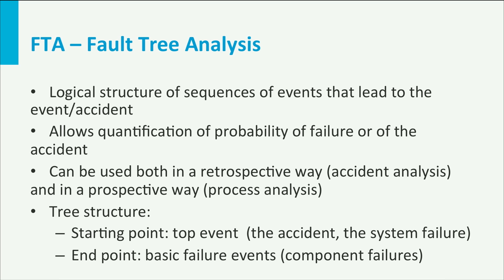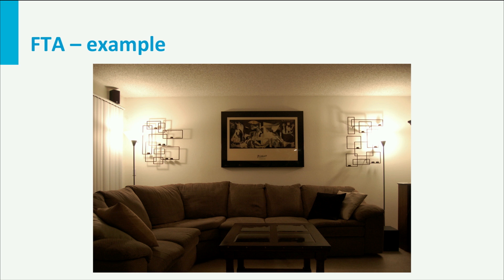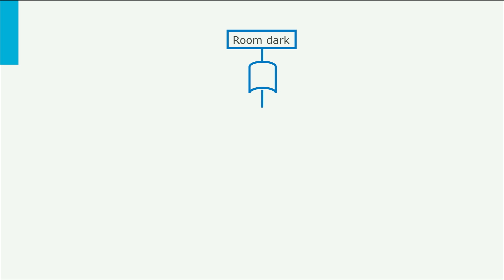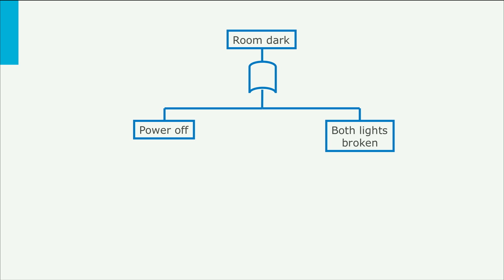Let's take as an example a room that has two lights in it. We enter the room and the lights don't go on. Our top event is a dark room, and we can think of two reasons why this is the case: there is a power failure, or the two lights are broken. Notice the little symbol that connects the two sub-events to the top event. This is called a gate, and in this particular instance it is an OR gate. This means that only one of the sub-events is enough for the top event to happen. There is also an AND gate, which has a straight bottom, meaning that both sub-events are necessary for the top event to happen. In our case, however, we have an OR gate.